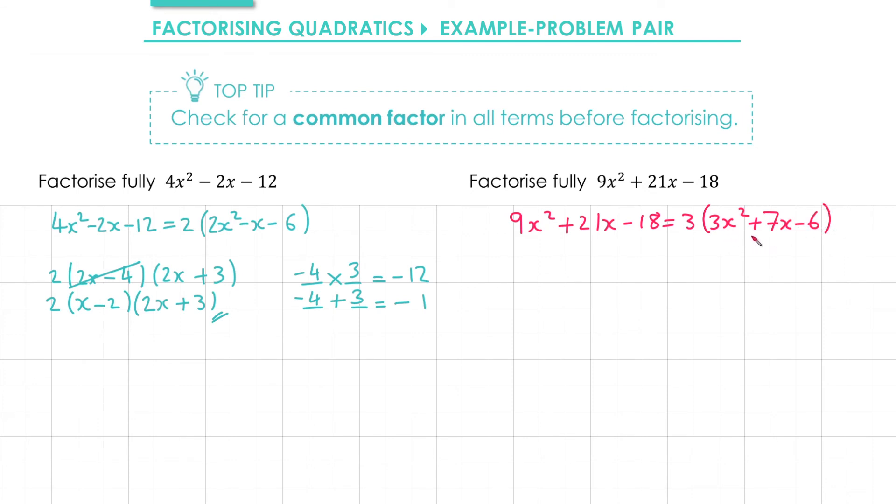Next we'll factorise 3x² + 7x - 6 using the cancelling method. We want two numbers that multiply to give negative 18, and the same numbers must add together to give 7. The numbers we're looking for are 9 and negative 2.